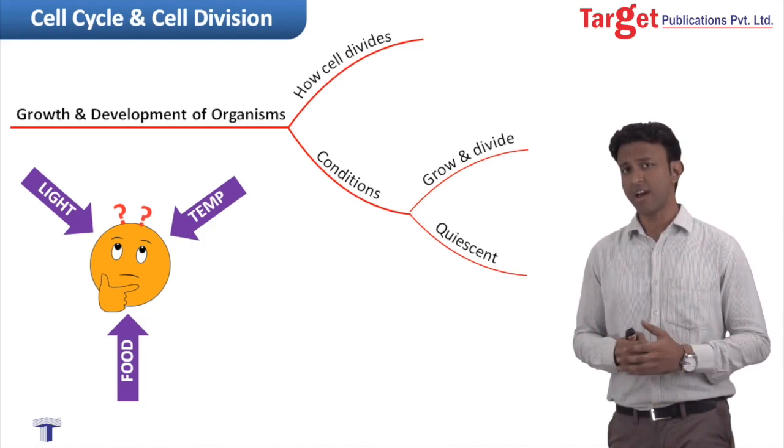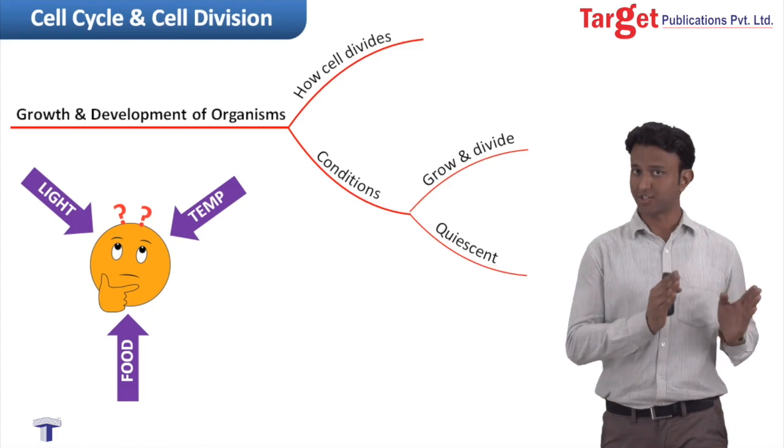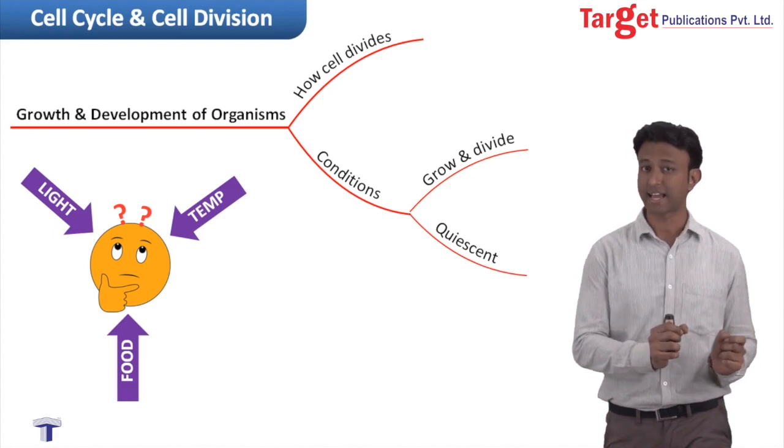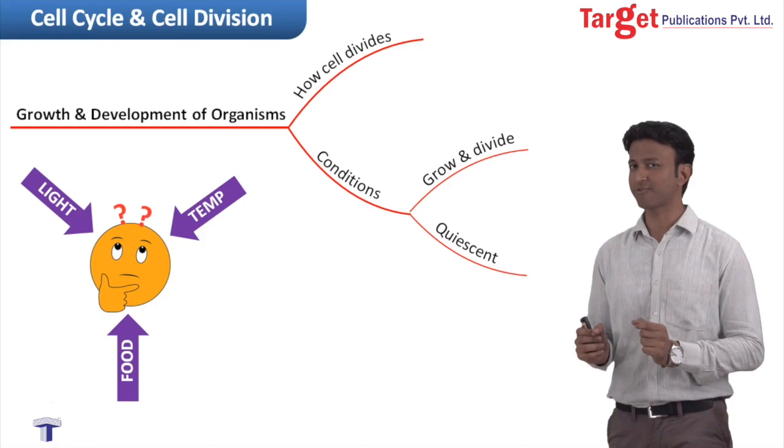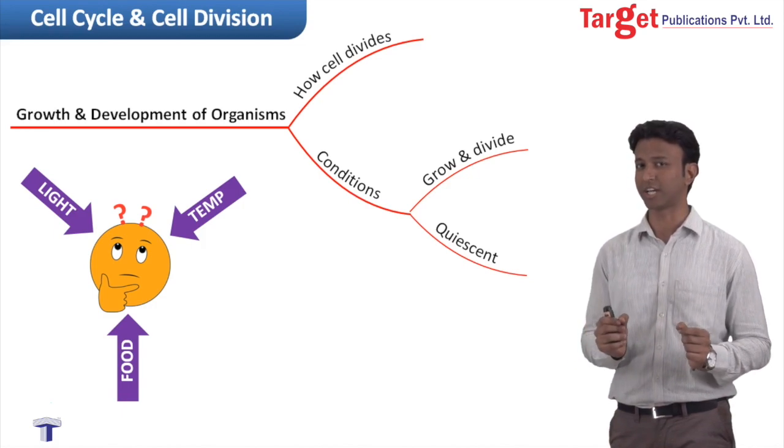If we go further into detail to understand cell division, we get to see that there are two kinds of cells, prokaryotic cells and eukaryotic cells. And the rules of cell division are different for these two sets of organisms.